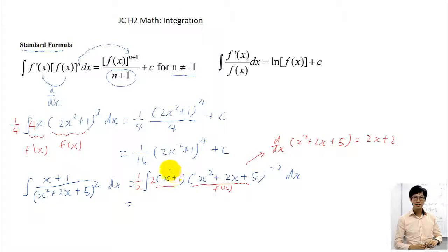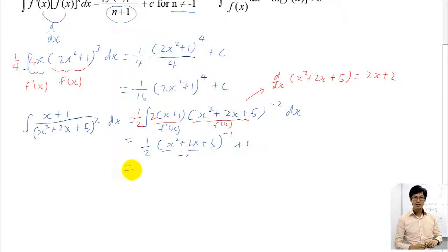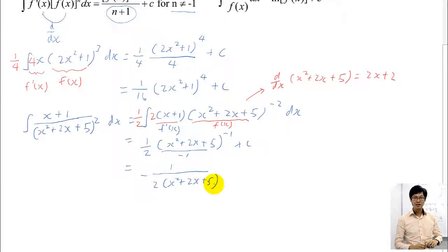Now I'm good to go to apply the formula, because this is my f'(x) and outside is my f(x). So if I integrate this, my formula will become half times bracket x squared plus 2x plus 5, minus 2 plus 1 gives me minus 1, divided by minus 1, plus c. Now to simplify: half divided by minus 1 is minus half. And because the power is negative, you can't leave your answer like this — you must change it back to fraction form. So you get negative 1 over 2 times x squared plus 2x plus 5 to the power of negative 1, plus c. This will be your final answer.